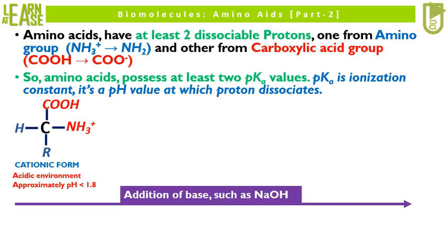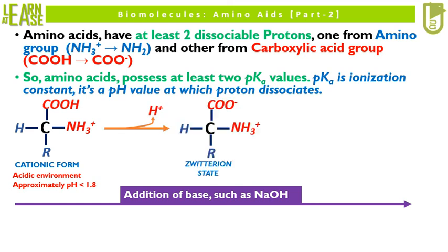On addition of a base such as NaOH, the pH of the solution increases. On increase in pH, COOH loses its proton and gets converted to COO−. Here the cationic amino acid gets converted to the zwitterion state. The pH at which COOH loses its proton is termed as pKa1.